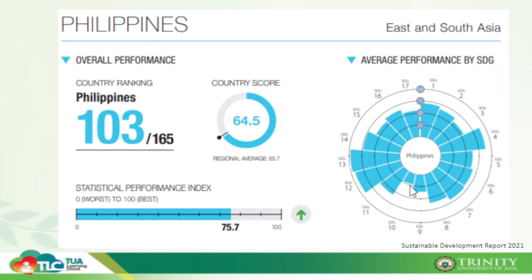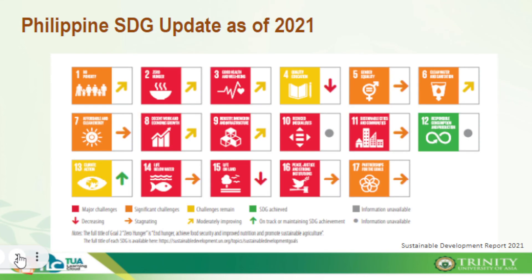Looking at the Philippines, ranked 103 with a score of 64.5, we are best performing in SDG number thirteen — climate action — followed by SDG number twelve — responsible consumption. We are also doing well in SDG number four — quality education. Our lowest scores are in SDG number ten — reduced inequalities, SDG number nine — industry and innovation, SDG number fifteen — life on land, and SDG number three — health care. We have achieved only one of the 17 SDGs: responsible consumption and production.